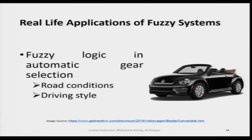Fuzzy logic can also be very helpful in automatic gear selection — for example, based on road conditions and driving style, and many other features can be added to support gear selection decisions. Road condition inputs would be like 'very good' or 'bad' or 'very bad', and driving style inputs like 'good style' or 'bad style'. Based on these inputs, the gear selector helps in selecting the gear appropriately to give better performance of the car.